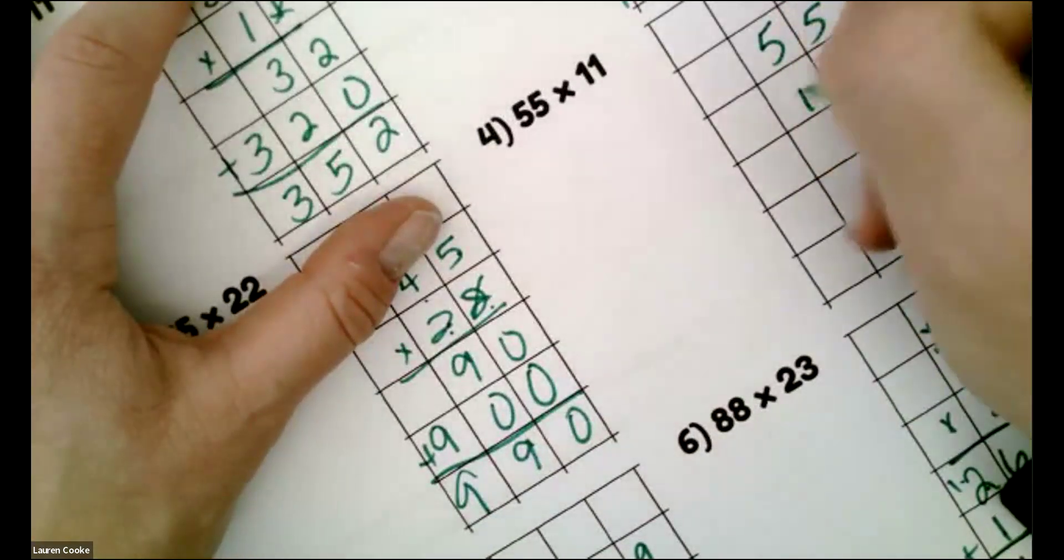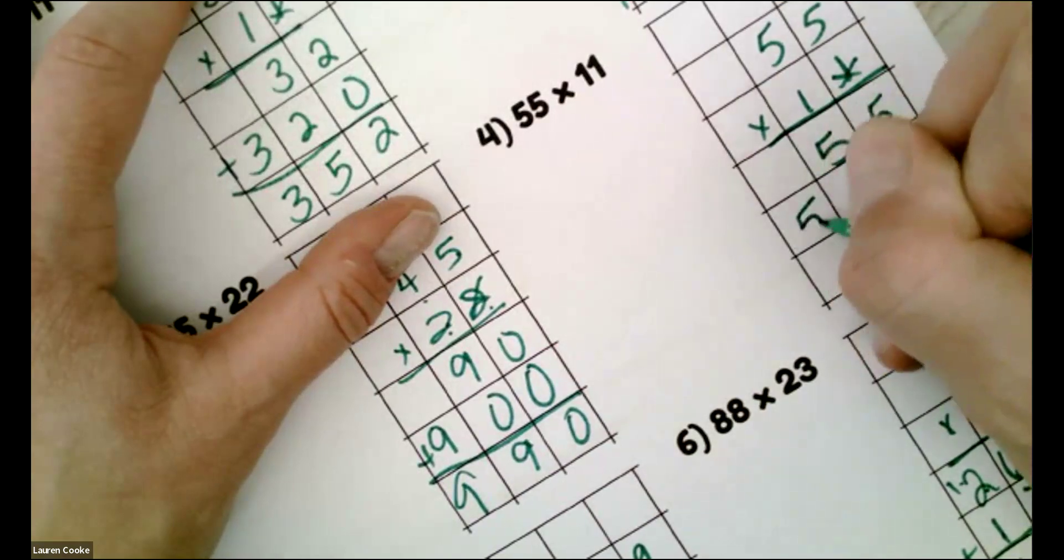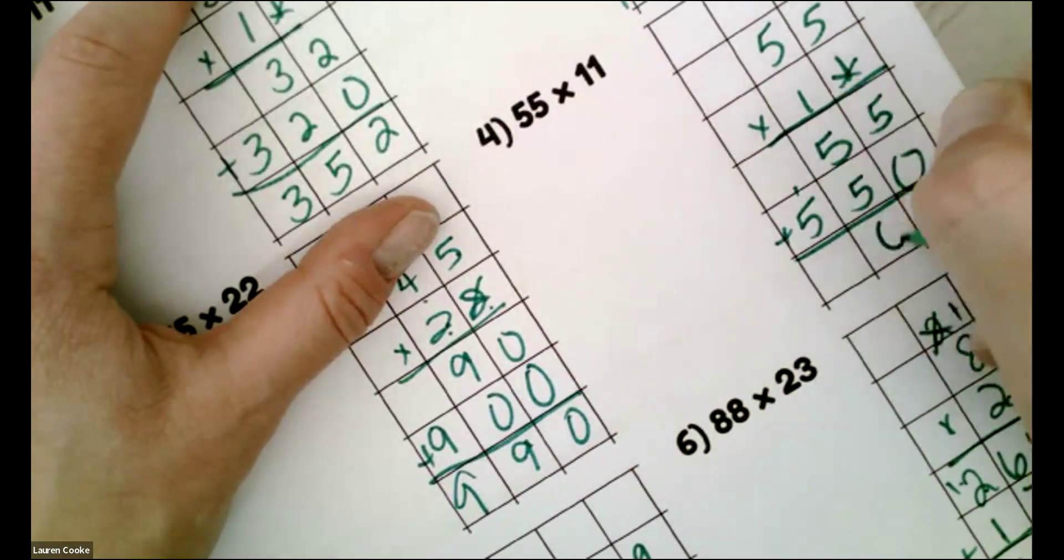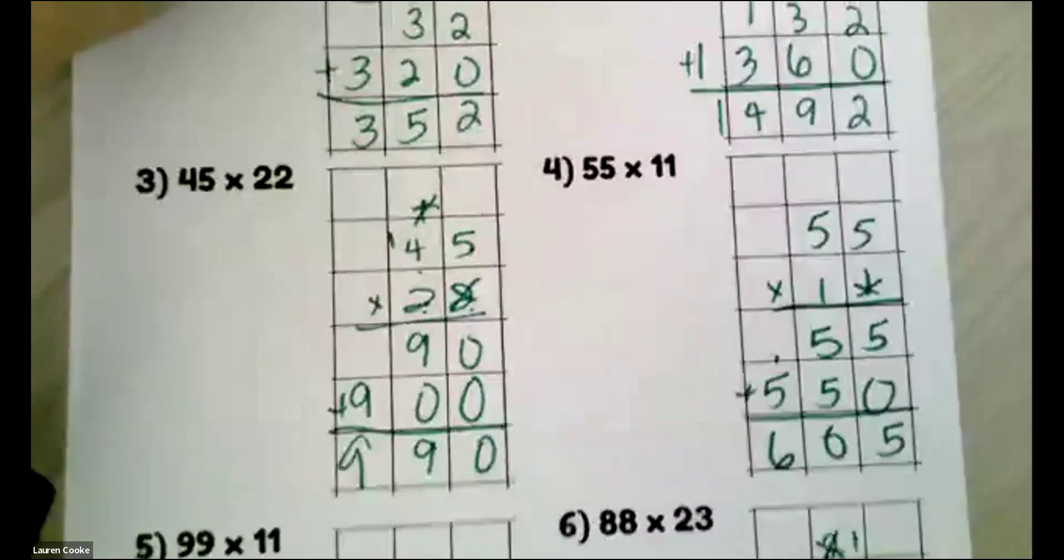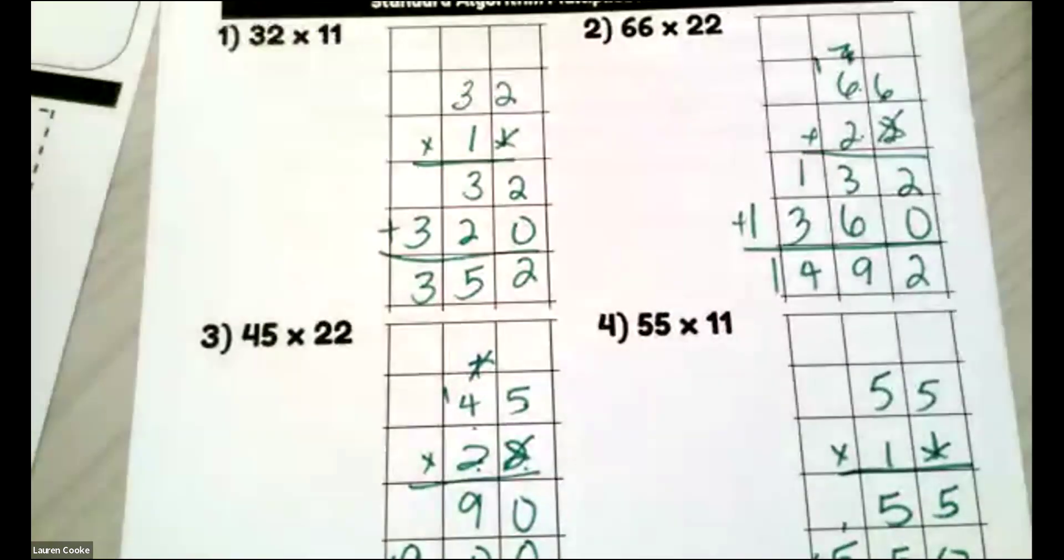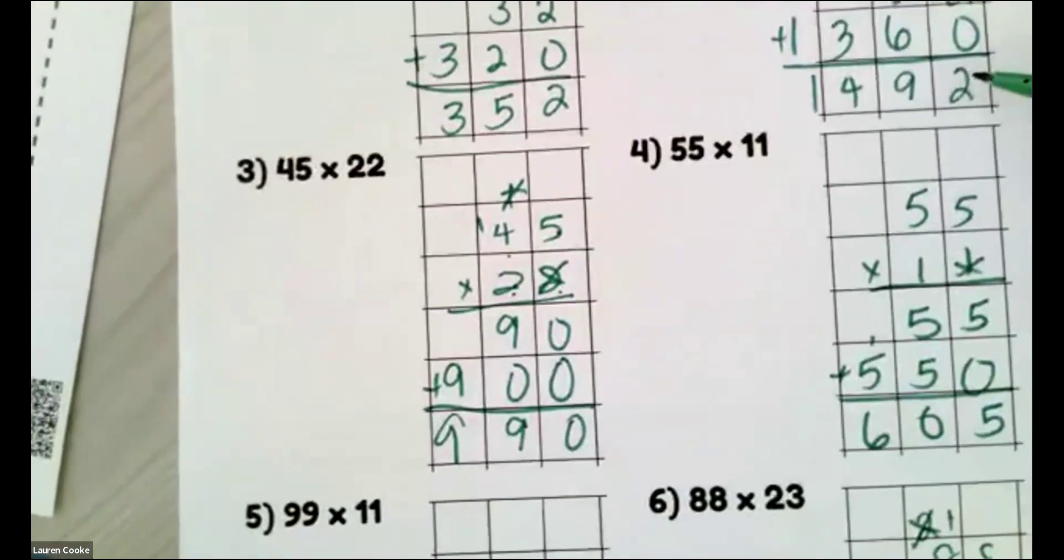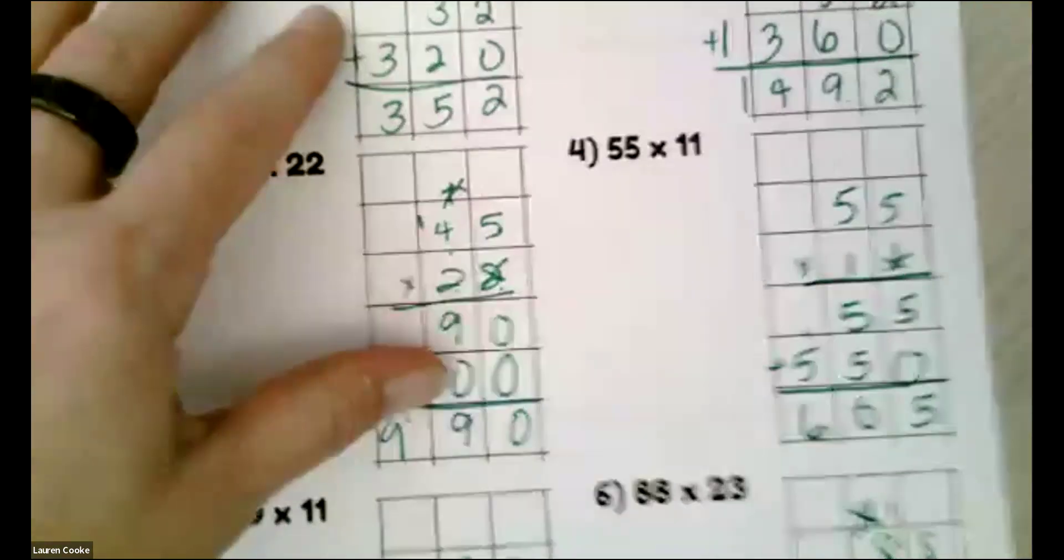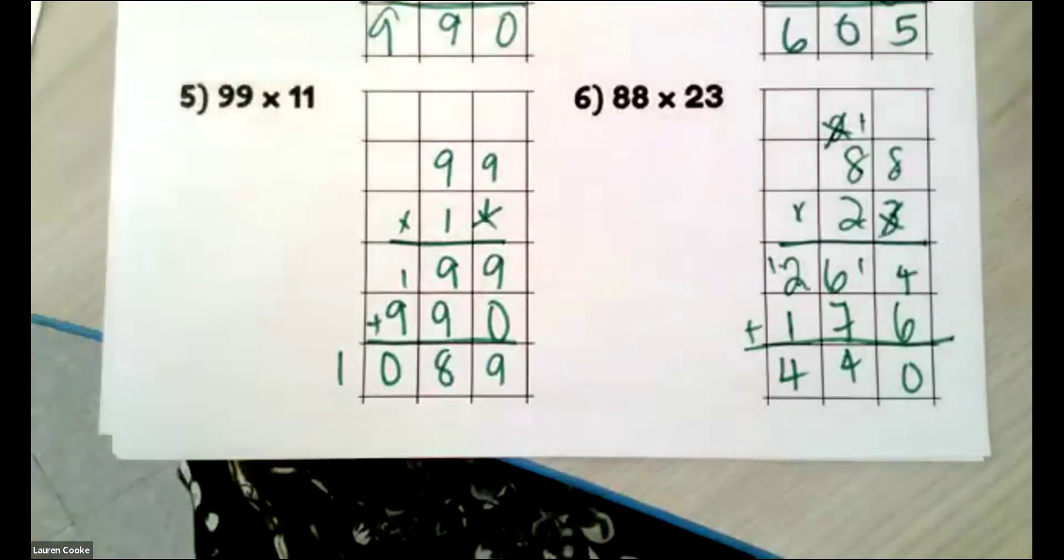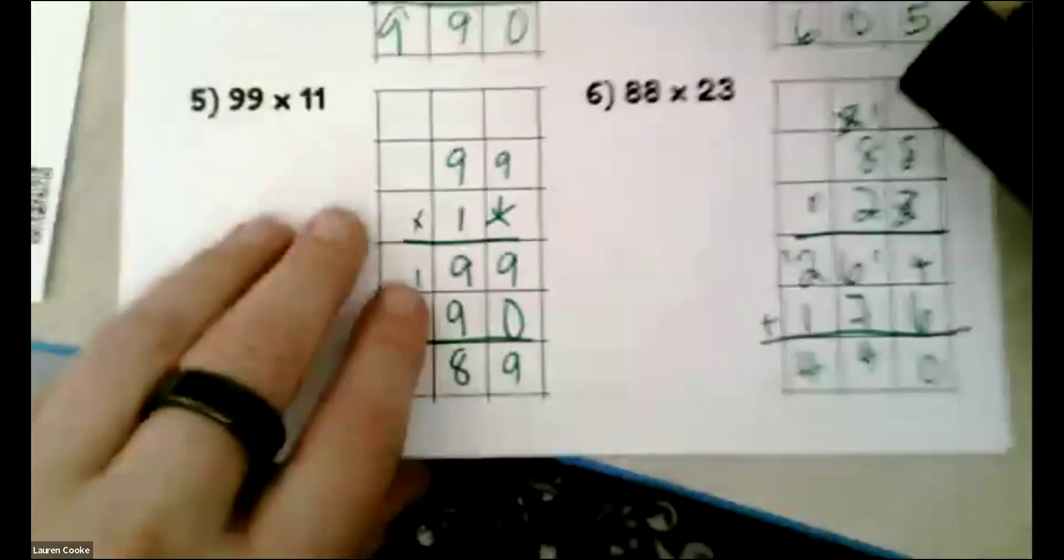55 times 11. Five, five, five, five, five, 10, six. So here's our answers. 352, 1,492. Number three, 990. Four is 605. Five is 1,089 and six is 440.